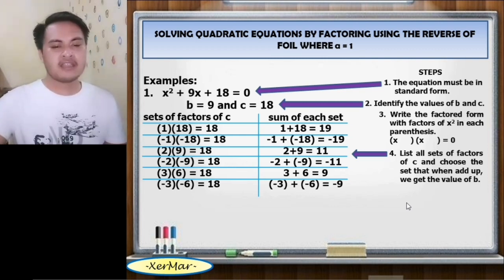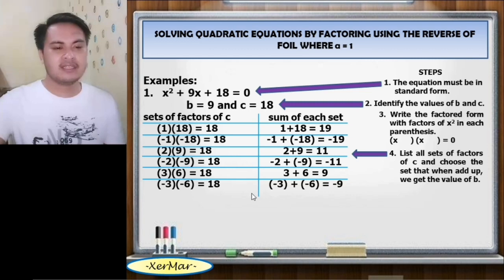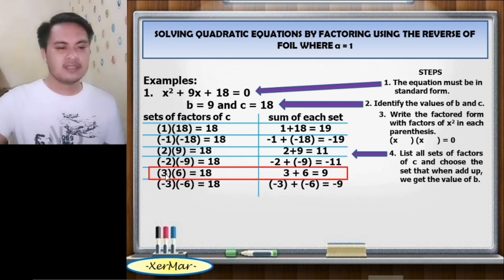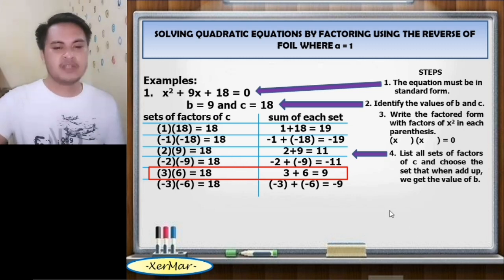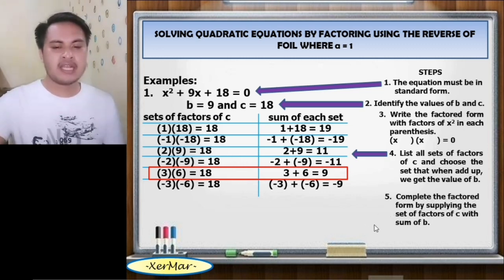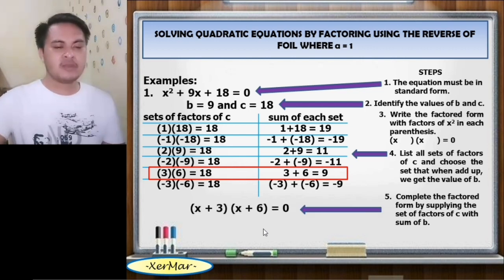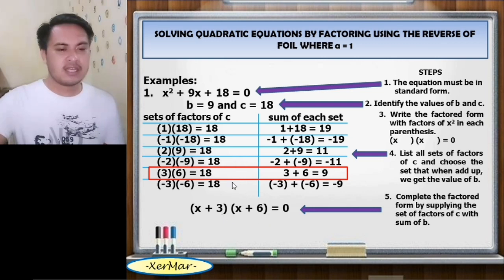We choose the set of factors of C with the sum equal to B. Pair number 5: 3 times 6 equals 18, and the sum is 3 plus 6 equals 9 — which is the value of B. Number 5, complete the factored form by supplying that set: quantity of x plus 3 times quantity of x plus 6 equals 0. The 3 and 6 came from 3 times 6 as a factor of 18 with a sum of 9.